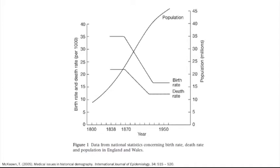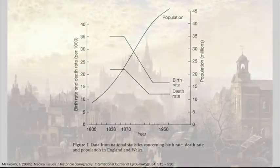So, considering both graphs, something happened in these countries starting since the mid-19th century that allowed, on the one hand, a dramatic increase in life expectancy, and, on the other hand, an increase in population due to a rapid decline in mortality rate. But what happened?